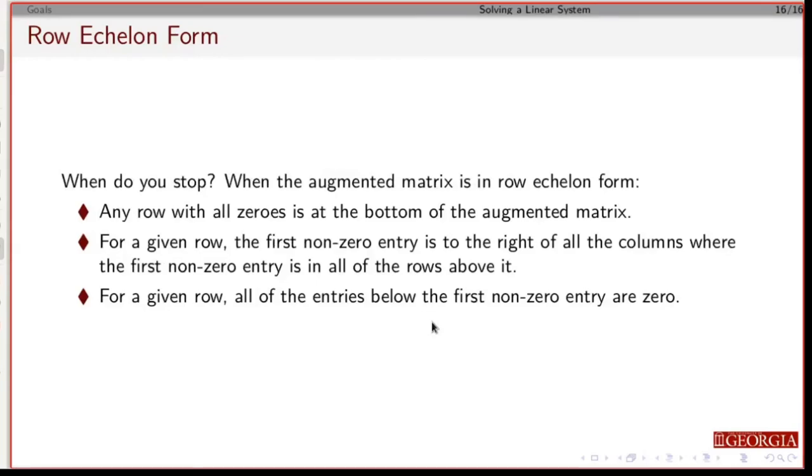You need to be able to recognize when you're done. When is the thing in row echelon form? Basically, it's these three situations. If you have a row with all zeros, it's at the bottom.